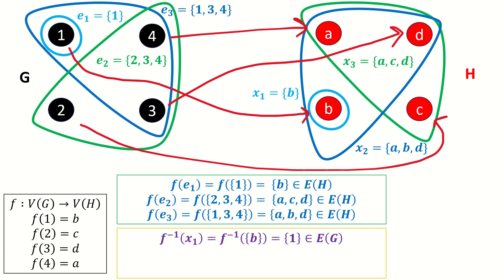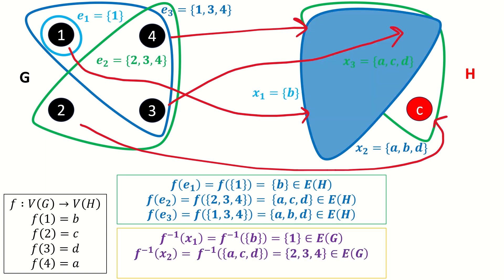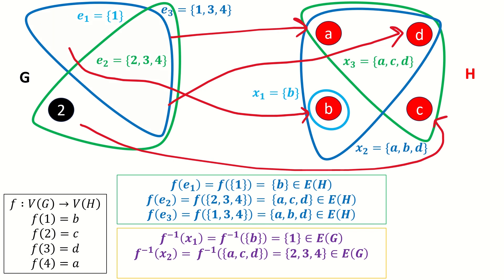In the other direction, the inverse image of X1 is the set containing 1; the inverse image of X2 is the set containing 1, 3, and 4; and the inverse image of X3 is the set containing 2, 3, and 4. All of these sets are edges in G, so we can say that the function F preserves edges both ways, so it's an isomorphism, and G and H are isomorphic.